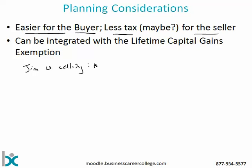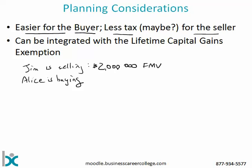Here's a very simple scenario. Let's say that Jim is selling a business and his business is worth $2 million — so the business has a $2 million fair market value. And Alice is buying the business; she's going to pay fair market value. So we have two trade-off problems here: $2 million is a lot of money, so Alice maybe can't come up with all $2 million all at once.